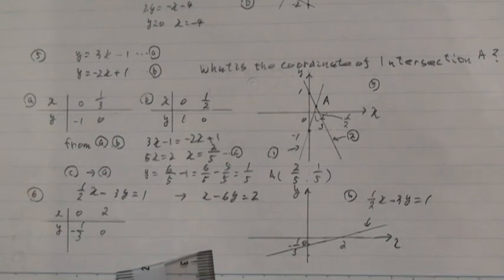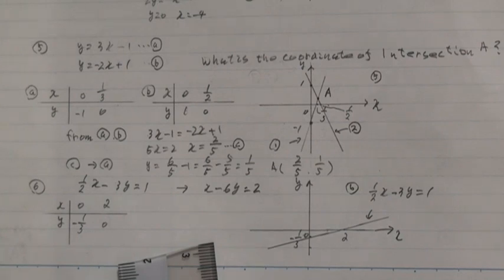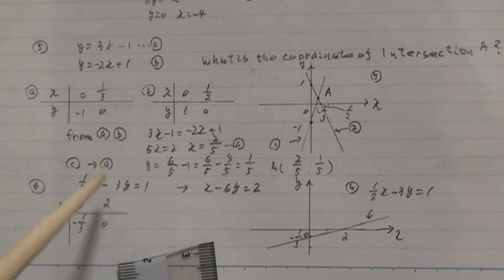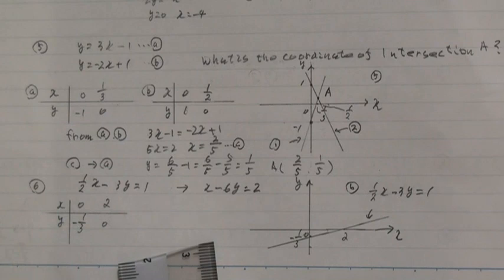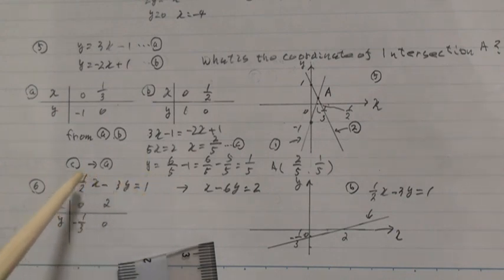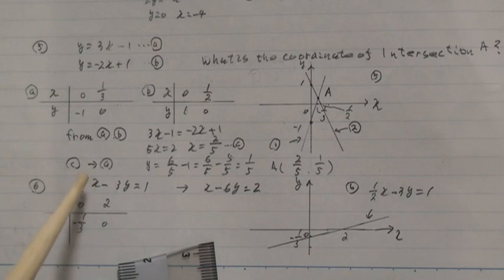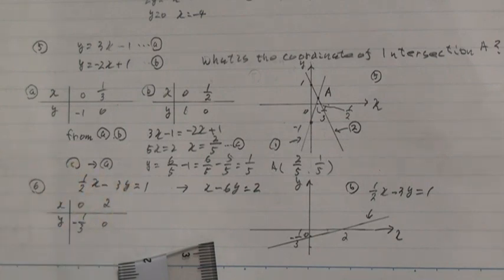Okay, I could say. And make a table for this graph: x equal 0, y equal 1; x equal 1 over 3, y equals 1 over 3. And x equals 2, then y equals 2; then y equals 0. Okay.